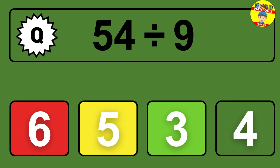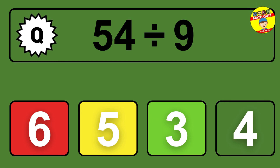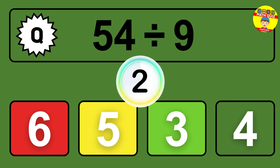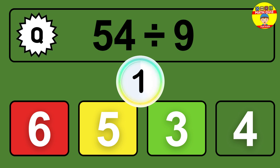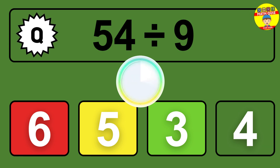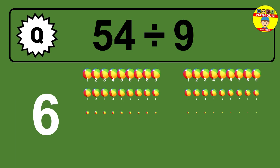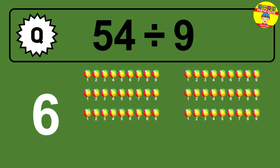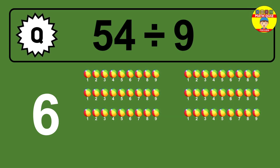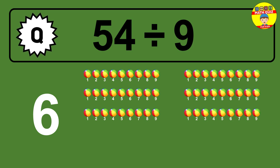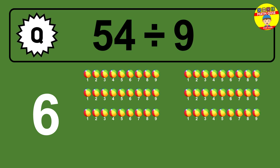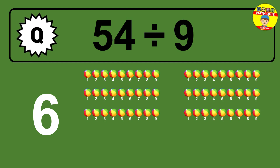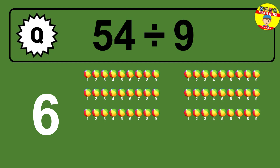54 divided by 9 — time to think. Let's go to the solution. Divide the number 54 by 9. Each group contains 9 units, so dividing 54 by 9 results in 6 equal groups. Thus, the result is 54 divided by 9 equals 6.